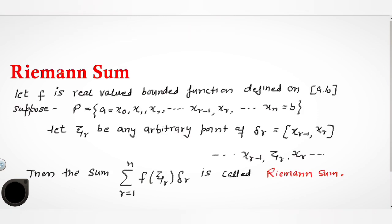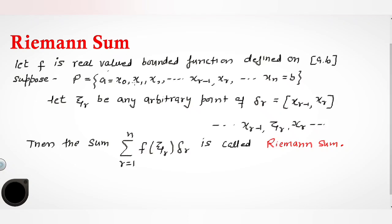And before we talked about this, what is Riemann sums? We talked about Riemann sums. We have learned that Riemann sums is summation f of xir delta r. This is called a Riemann sum.